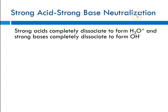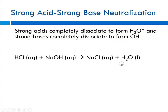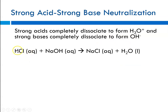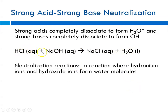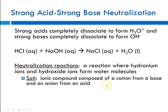Now we discuss strong acid-base neutralization. Strong acids completely dissociate forming H3O+ and strong bases completely dissociate releasing OH-. When a strong acid and a strong base react, they form a salt — sodium chloride — and water. If equivalent amounts are present, the reaction is completely neutralized. A neutralization reaction occurs when hydronium ions and hydroxide ions are equal, forming water and resulting in a neutral solution. The salt is the ionic compound composed of the cation from the base and the anion from the acid: acid plus base yields salt plus water.